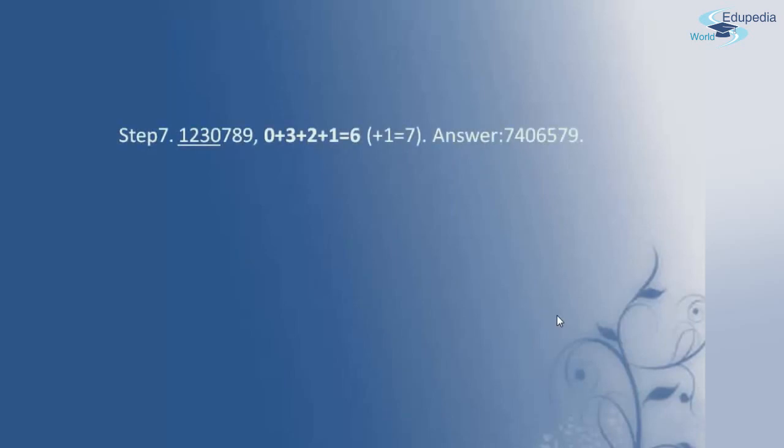Moving to the next step, leaving 3 digits from the right side, I add 4 digits: 0, 3, 2 and 1. Adding these gives 6, and adding carry of 1 gives 7. This 7 is written in the answer. In the answer, I now have 7, 4, 0, 6, 5, 7 and 9.